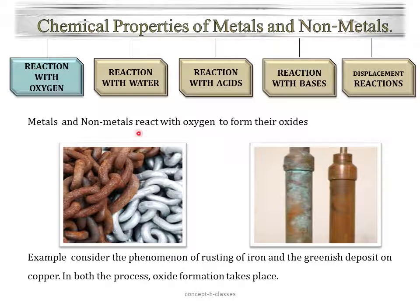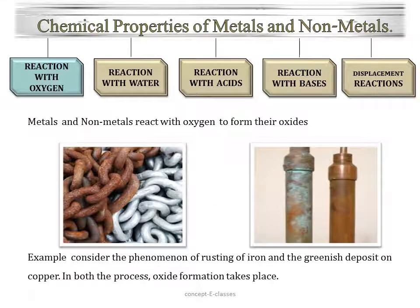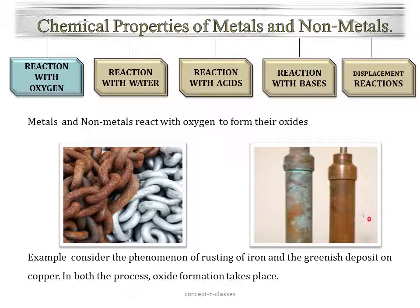Metals and nonmetals react with oxygen present in the air to form their respective oxides. For example, consider the phenomenon of rusting of iron and the greenish deposit on copper. In both processes, oxide formation takes place. When iron reacts with oxygen, a red oxide — iron oxide — is formed, which is called rust. Similarly, when copper is exposed to moist air, it acquires a dull green coating due to the formation of oxides.